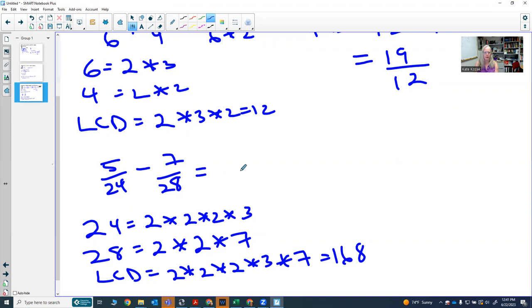So now I'm going to build both fractions up to that denominator. 24 times 7 is 168. So whatever I do in the denominator, I do in the numerator. So I'm multiplying by the number 1.